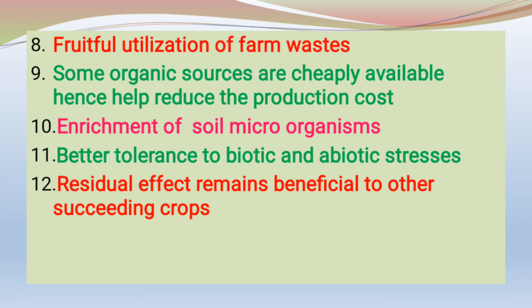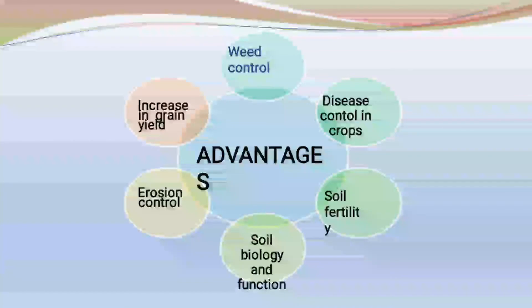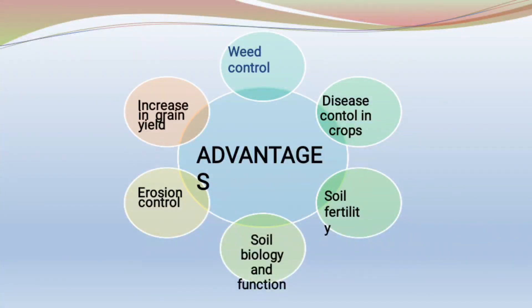In summary, INM improves soil fertility, productivity, and soil health. It also improves the farmer's financial status by reducing fertilizer costs. It improves biological properties, meaning microbial activity increases. Additional advantages include weed control, disease and pest control related to the farm, soil fertility maintenance, soil biological function, erosion control, and increased green yield. These are the basic advantages of integrated nutrient management.